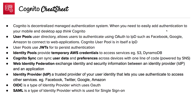We're on to the Amazon Cognito cheat sheet, so let's jump into it. Cognito is a decentralized managed authentication system. When you need to easily add authentication to your mobile or desktop apps, think Cognito.